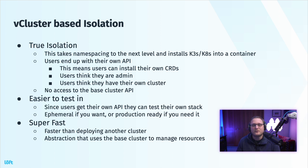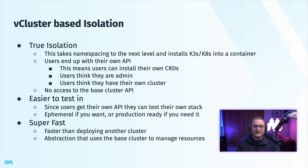If you want to do something ephemeral, like stand something up and run a preview environment, you can do that. If you want to run something in production, you can do that too. There's a way to install it with HA and there's also a pro product if you want to look into that. Super fast — faster than deploying another cluster. With vCluster, it's super fast: you just deploy it, it comes up, it's just a container running in Kubernetes. So as fast as you can deploy a container, that's how fast you can get it running. It's an abstraction that uses the base cluster to manage resources — you're using Kubernetes still, you're just telling Kubernetes what to create.